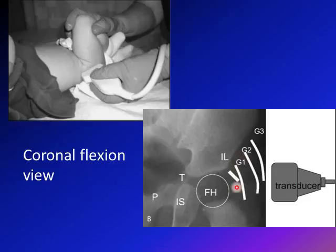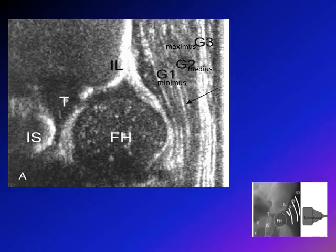On the coronal flexion view, the transducer is placed laterally. You will see the gluteus maximus, medius, and minimus, then the femoral head. Above that is the iliac crest, below is the ischium, and in the middle is the triradiate cartilage. Keep this anatomy in mind — it corresponds directly to what you see on an AP x-ray of the hip.